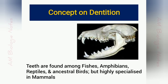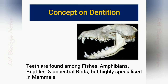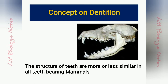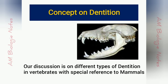Teeth are found among fishes, amphibians, and reptiles, and are also known to have been present in ancestral birds. But teeth are most highly specialized in mammals. In the last video I already discussed the general structure of a typical tooth, which is more or less similar in all teeth-bearing mammals. So in this video I will discuss the different types of dentition in vertebrates with special reference to mammals.